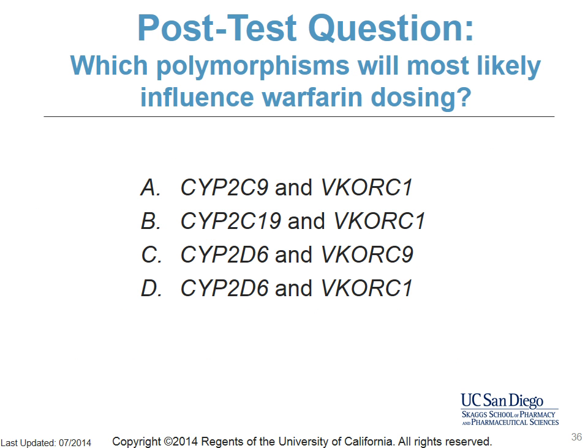Here is the post-test question: Which polymorphisms will most likely influence warfarin dosing? Options are: A, CYP2C9 and VKORC1; B, CYP2C19 and VKORC1; C, CYP2D6 and VKORC9; or D, CYP2D6 and VKORC1. The correct answer is A, CYP2C9 and VKORC1.